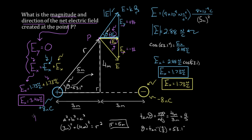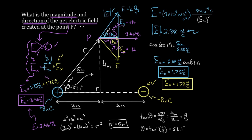Now you might be worried — this is just the horizontal component. How do we get the magnitude of the total net electric field? Since there was no vertical component of the electric field, the horizontal component equals the magnitude of the total electric field at that point. If there were a vertical component, we'd use the Pythagorean theorem. But since the vertical components canceled, the total electric field just points to the right and equals 3.46 newtons per Coulomb.